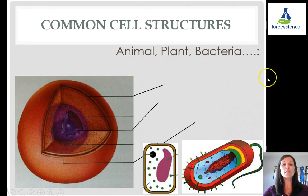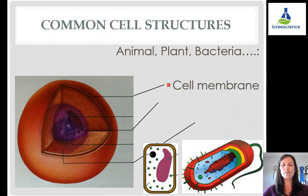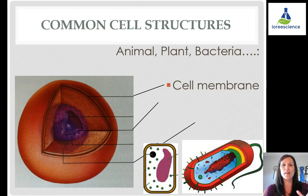No matter what type of cell we're looking at — whether it's plant, animal, or bacteria — there are some common structures. These components consist of a cell membrane, which encapsulates the cell to keep it all together. The cell membrane identifies the edges or boundaries of the cell.